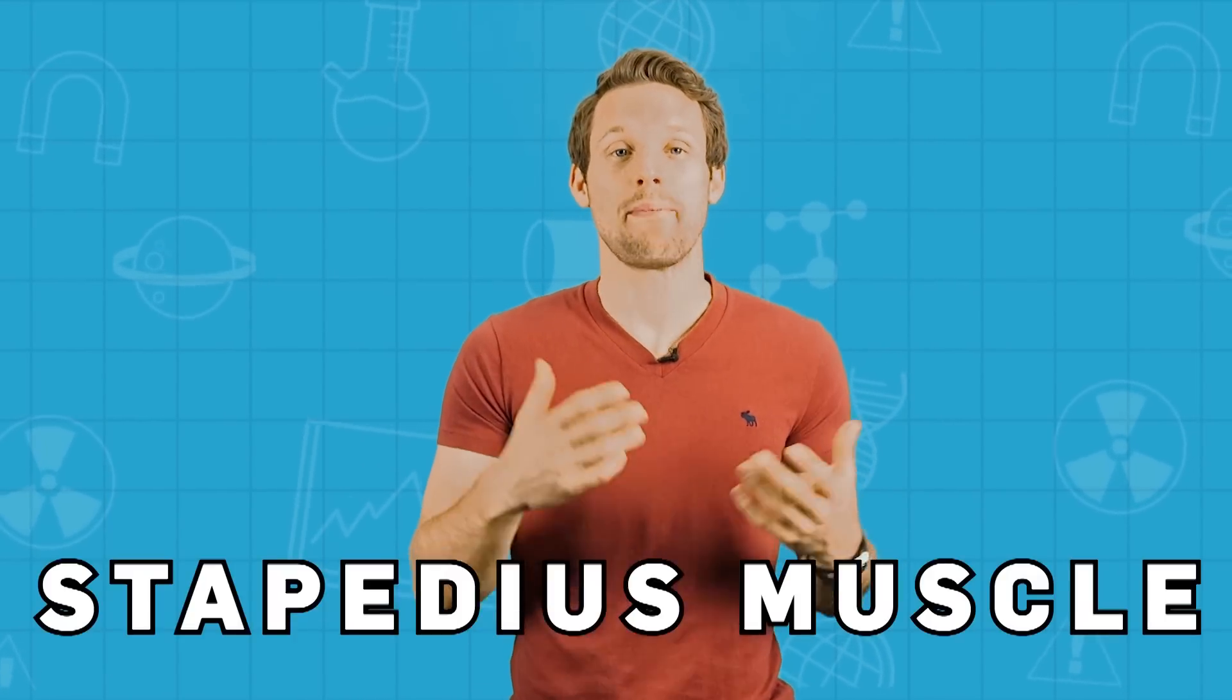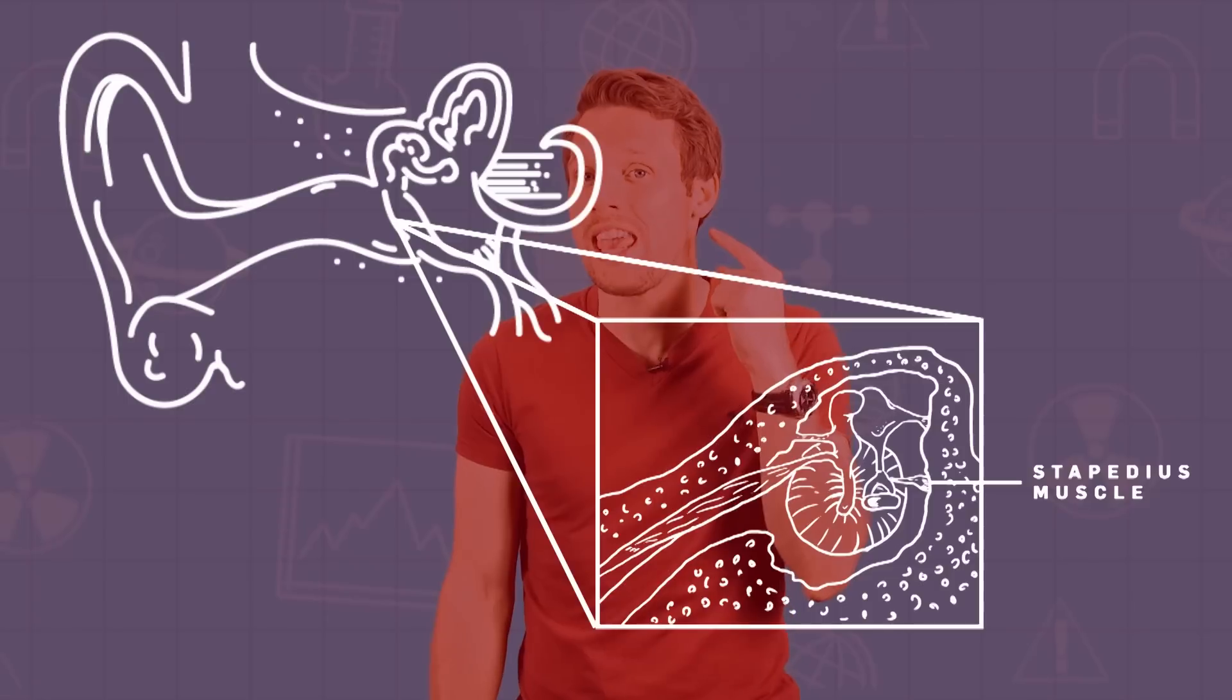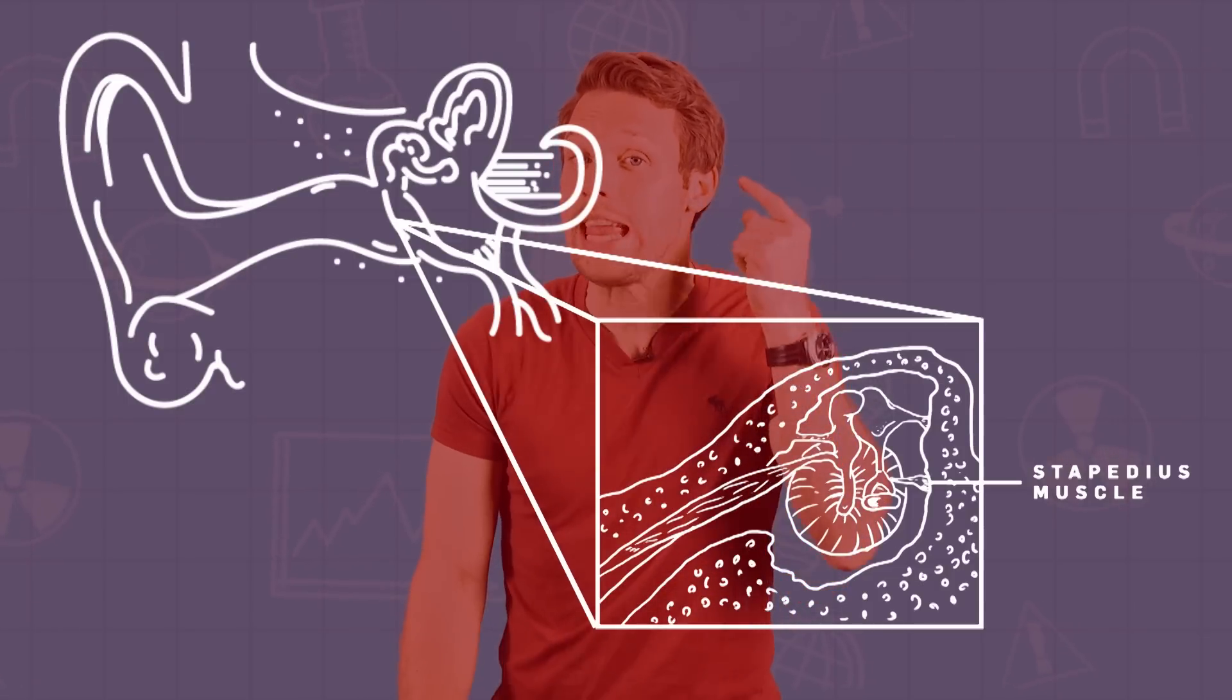And the smallest muscle in the human body, the stapedius muscle which is embedded in your inner ear. The job of the stapedius muscle is to move the tiny 6mm long stapes bone. Interesting fact for you.